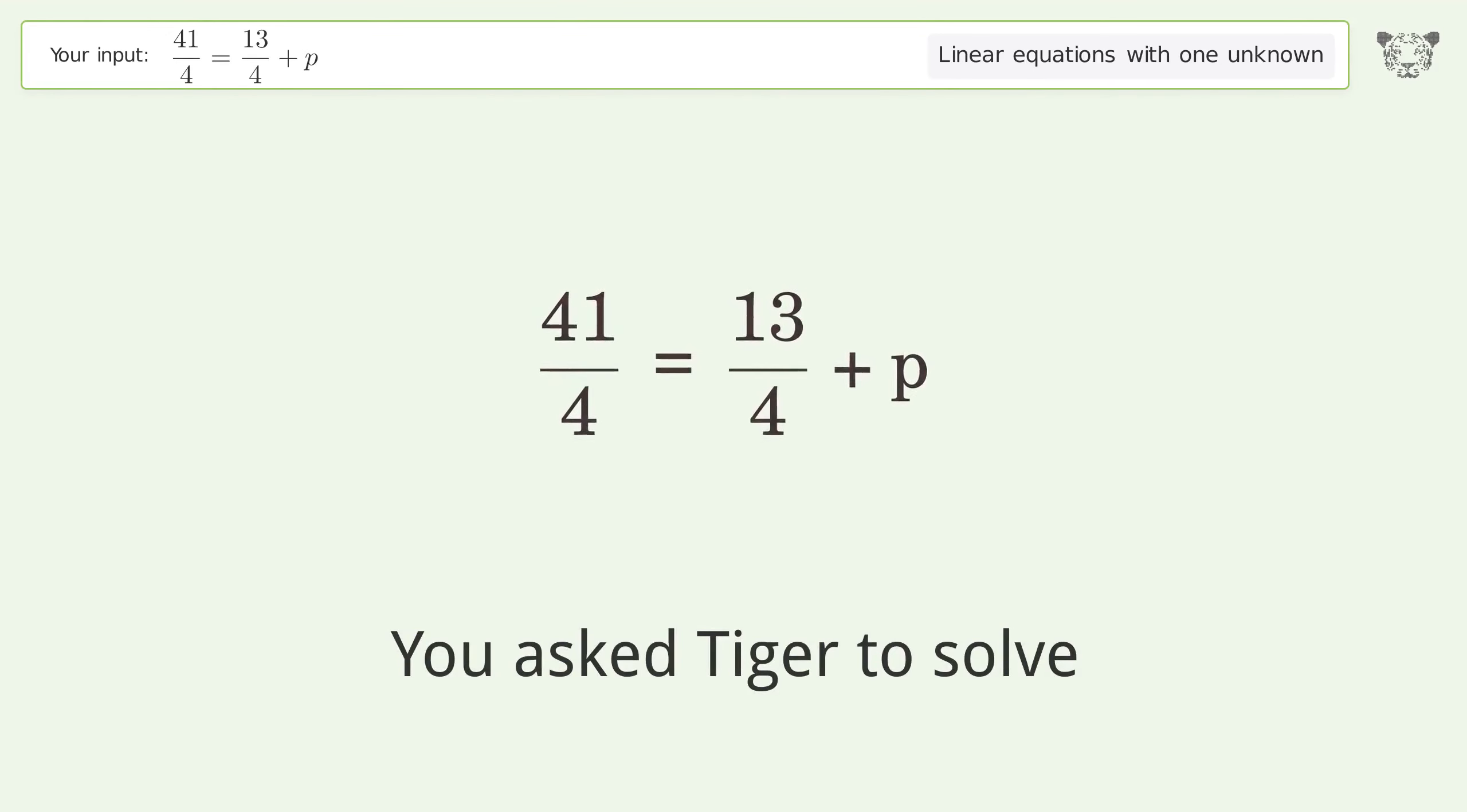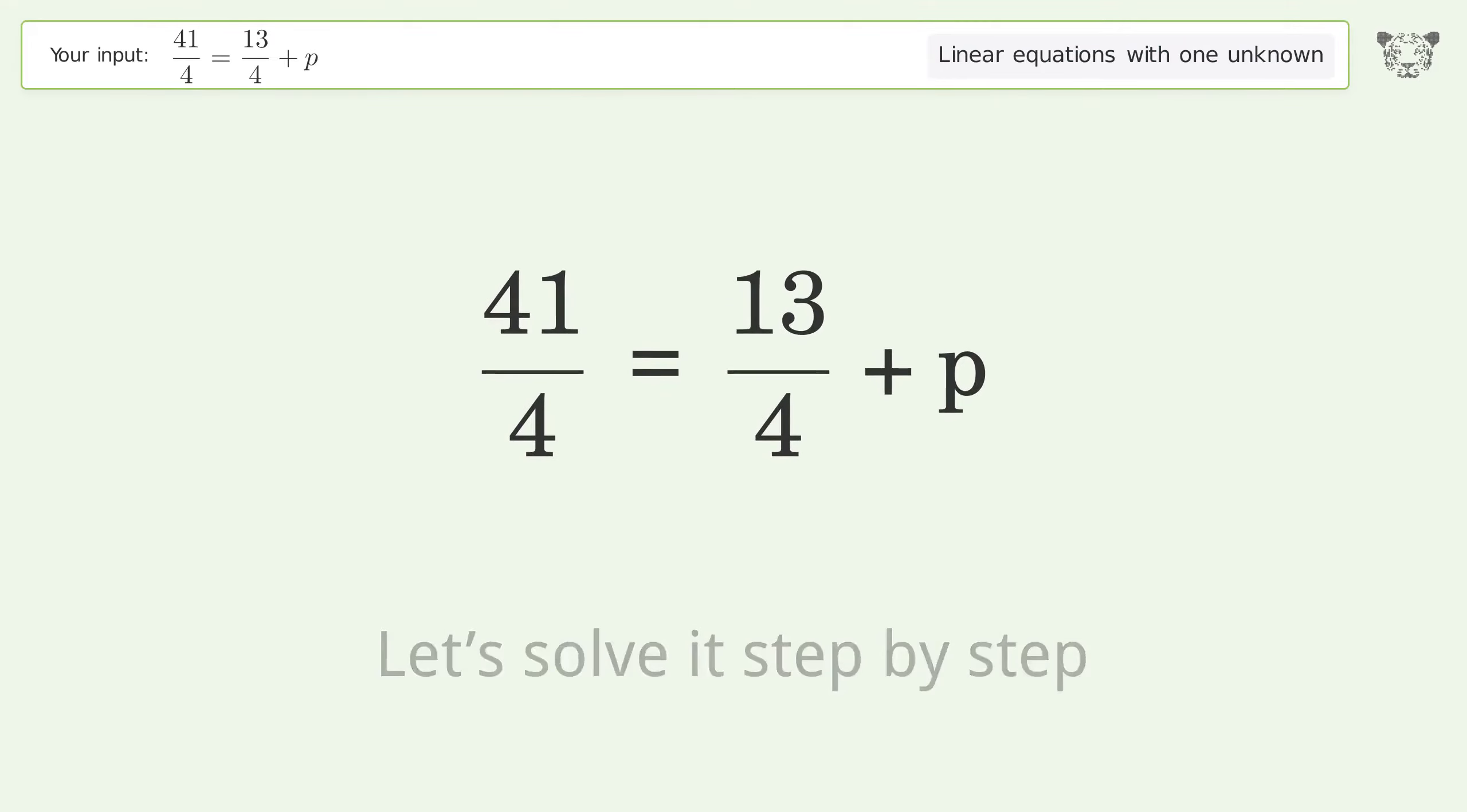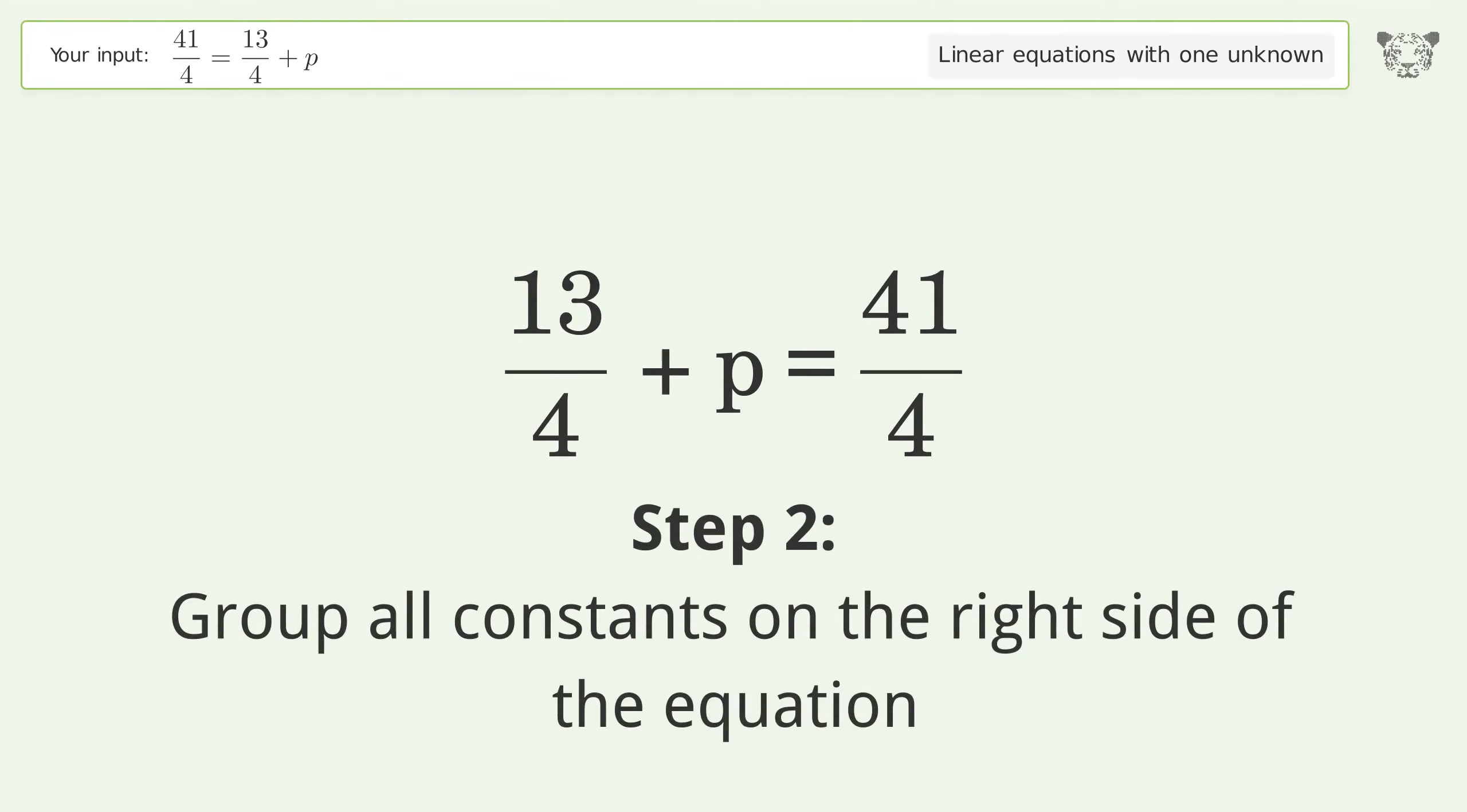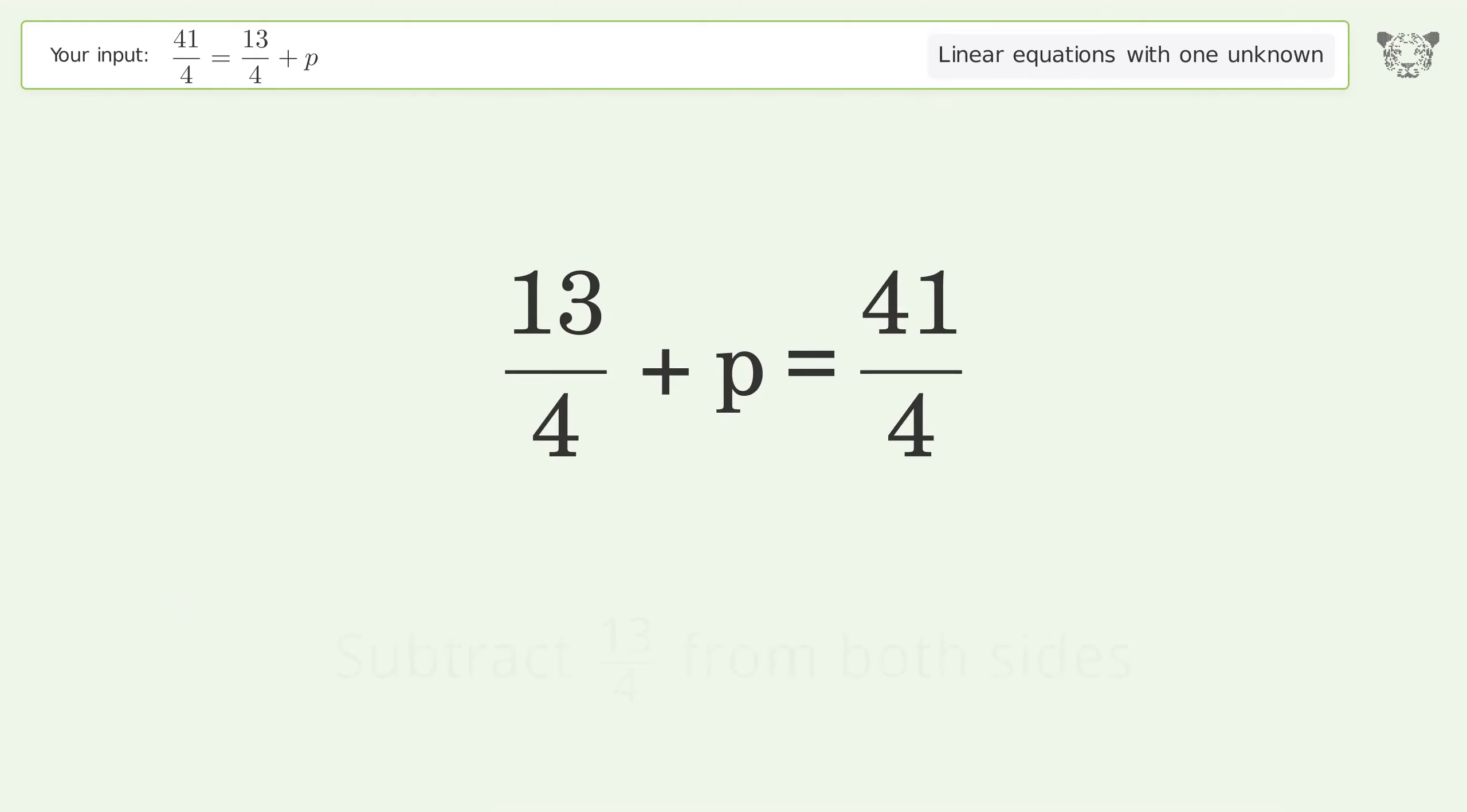You asked Tiger to solve this, which deals with linear equations with one unknown. The final result is p equals 7. Let's solve it step by step. Swap sides, group all constants on the right side of the equation, subtract 13 over 4 from both sides.